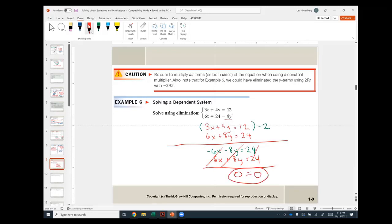Whenever I have 0 equals 0, that means I have the same exact line. I have infinite number of solutions. Notice nothing's dependent on x or y because 0 always equals 0.